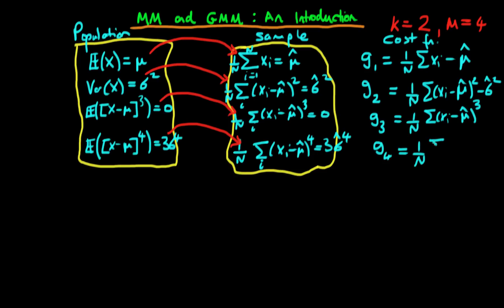And then finally for g4 we have the sum of xi minus mu hat all to the power 4 minus 3 sigma hat to the power 4 as our final cost function.